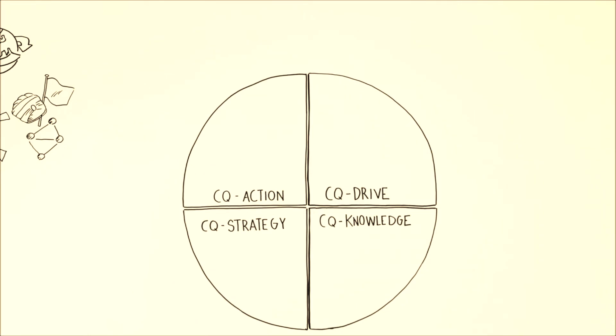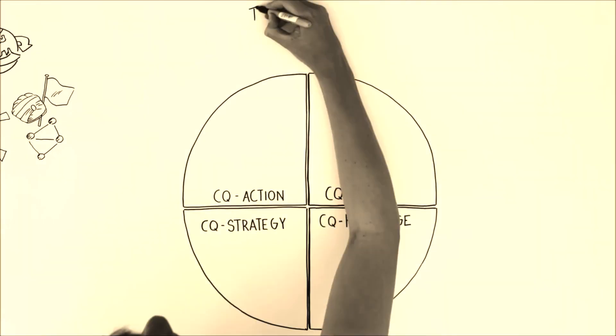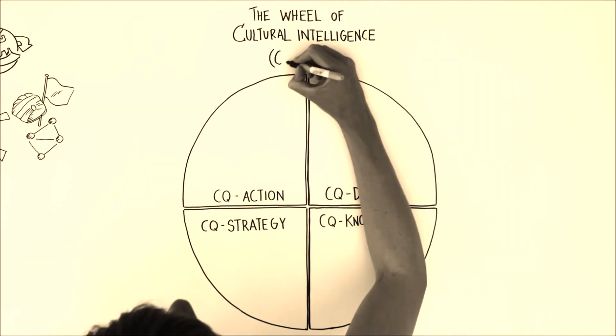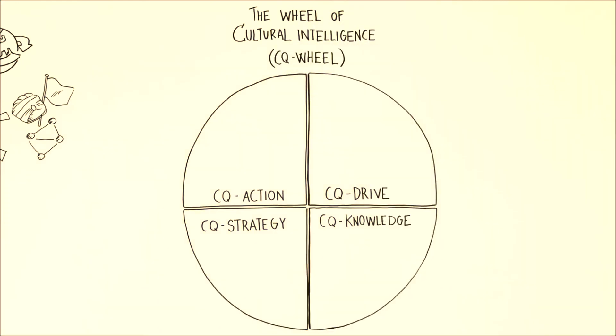To do that, we need to break down cultural intelligence into four focus areas. We call that the Wheel of Cultural Intelligence, or CQ Wheel.